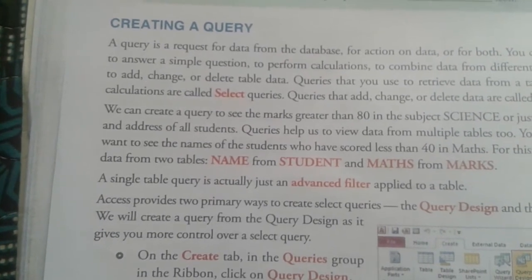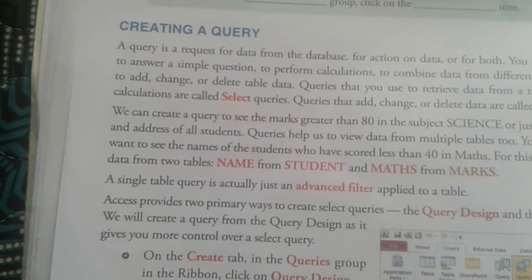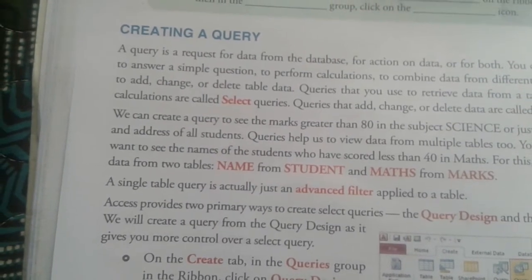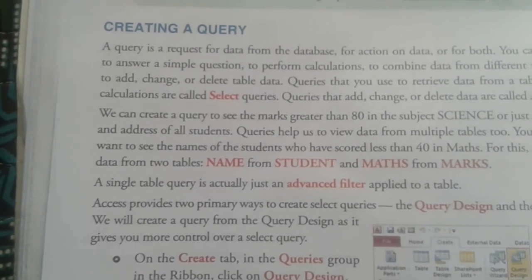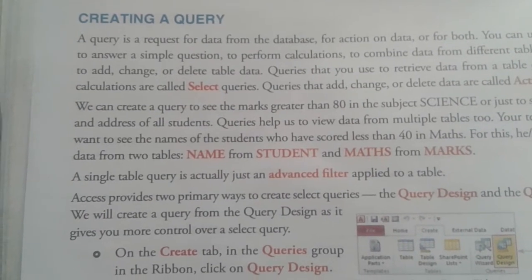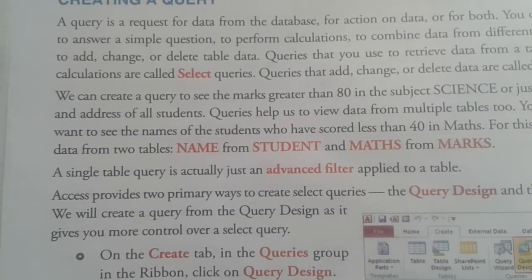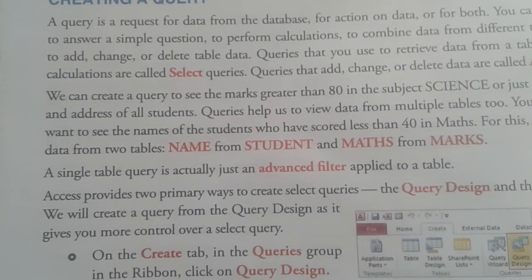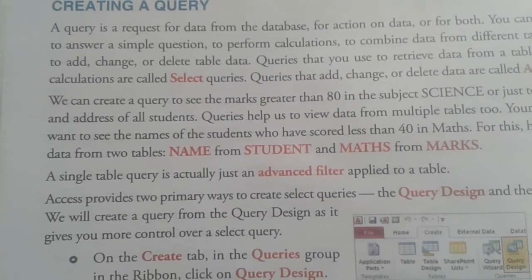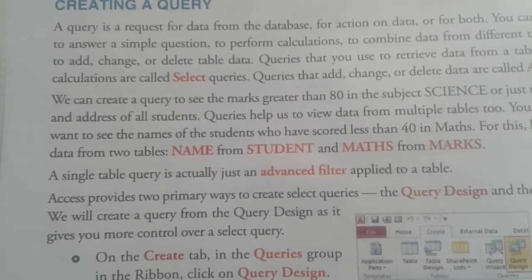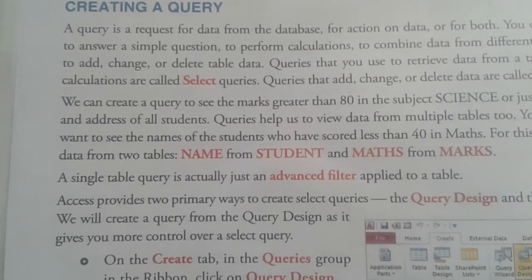Show: a check mark is used to indicate that this field will be visible in the result of the query. To hide the field during runtime, deselect the check mark by clicking it. Criteria: it is used to specify exactly the condition on the basis of which the result will be filtered in the query output. Or: it is used to specify multiple criteria.